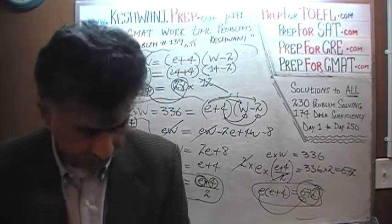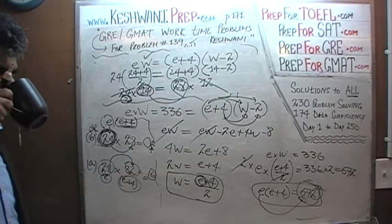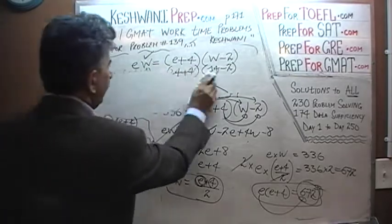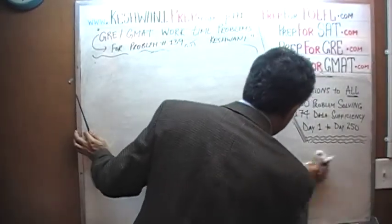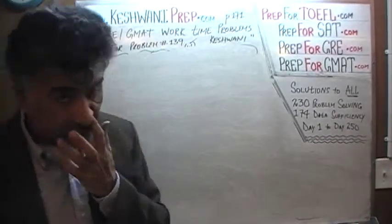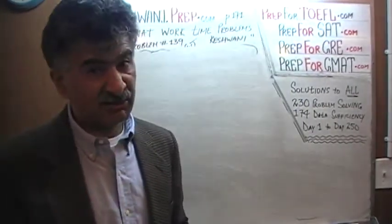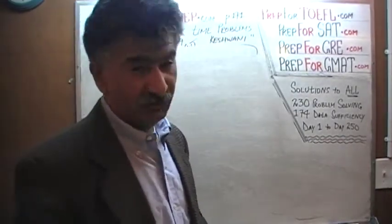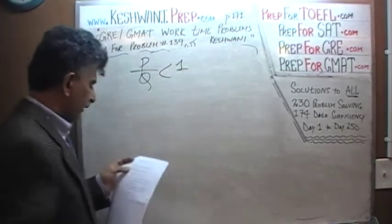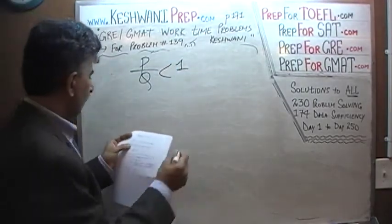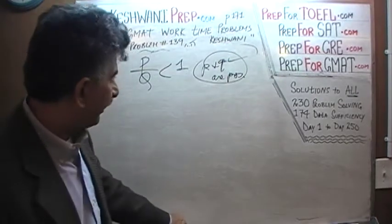Let's go on to the next one, number 138. We are told that P over Q is less than 1. We are also told that P and Q are both positive. We will see the importance of the fact that P and Q are positive. The question is: which of the following must be true?